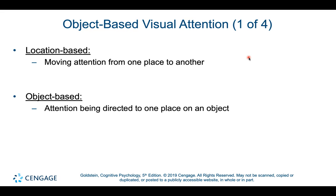With overt and covert attention, we used the analogy of a spotlight moving around a room — that's location-based attention. But attention can also be bound to objects rather than just physical spaces. We're going to investigate the distinction between location-based and object-based attention.